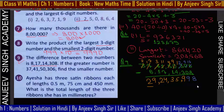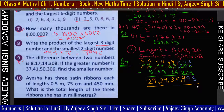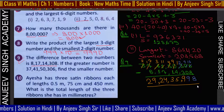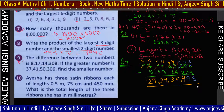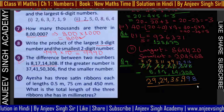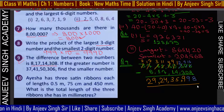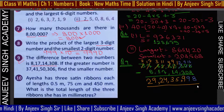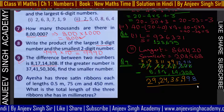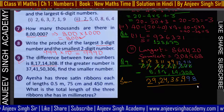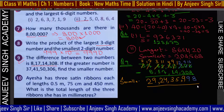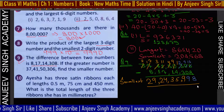तो answer आ गया। जो second question पूछ रहा था कि find the smallest number — greatest number से difference minus करने पर smallest number यह हो गया। यह आपका smallest number आ गया।